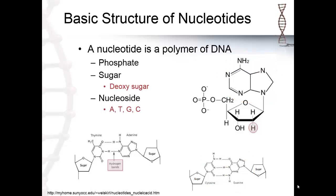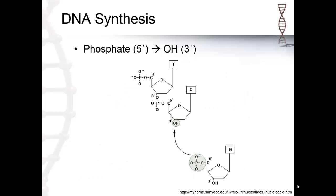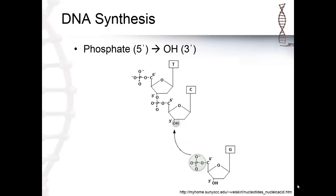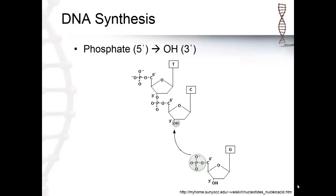The polymerase enzyme adds nucleotides to the DNA chain by connecting the phosphate on the 5' end of the new nucleotide sugar to the OH on the 3' end of the previous nucleotide sugar. This reaction releases a water molecule and the polymerase enzyme will continue to add another nucleotide to the new DNA strand.